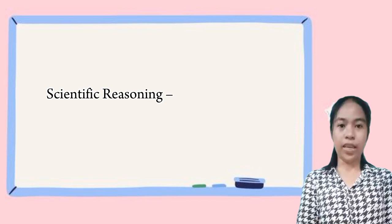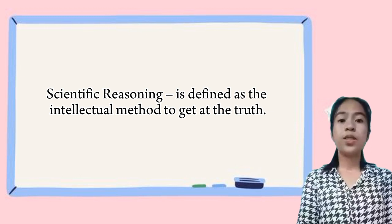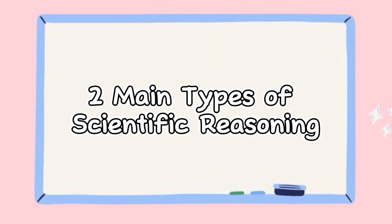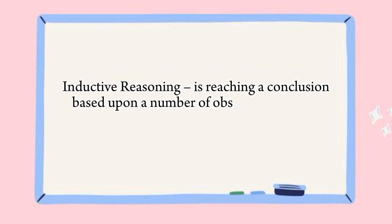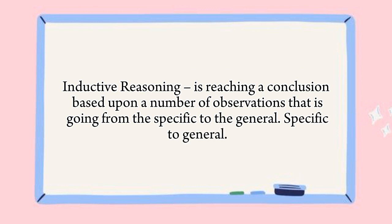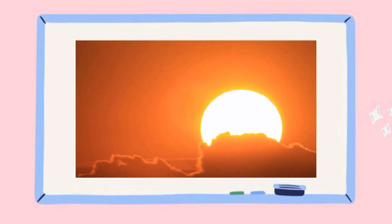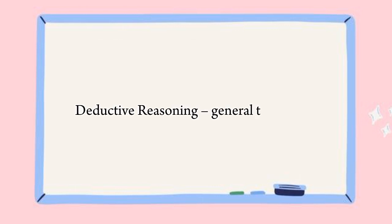Scientific reasoning is a way of thinking that helps us understand the world around us. It involves using evidence and logic to figure out what is true. There are two main types of scientific reasoning: inductive reasoning and deductive reasoning. Inductive reasoning is when we start with specific observations and use them to come up with a general conclusion. For example, if we observe that the sun rises in the east every day, we might use inductive reasoning to conclude that the sun always rises in the east.